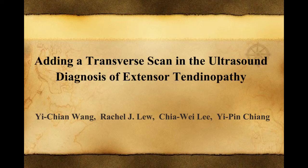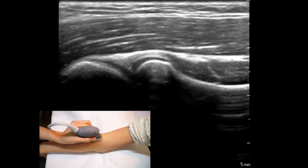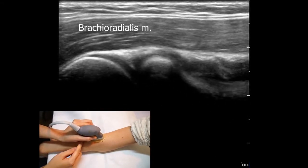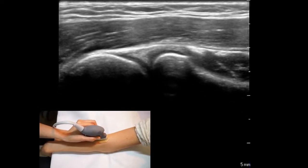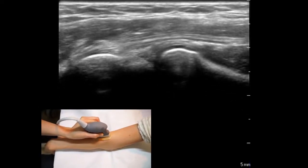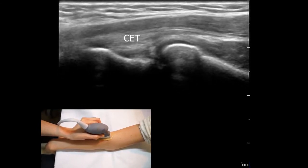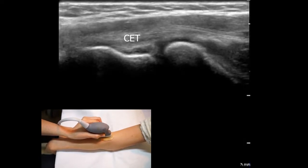Adding a Transverse Scan in the Ultrasound Diagnosis of Extensor Tendinopathy. When performing ultrasound examination of the common extensor tendon, it should appear beneath the brachioradialis muscle as a hyperechoic, parallel, cord-like structure. The probe is moved slowly from the radial side to the ulnar side to scan through the tendon and observe the echogenicity and internal fibrillary contents of the common extensor tendon.